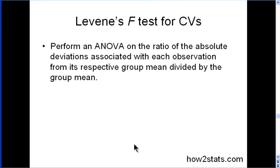You can actually use Levene's F-test for coefficient of variations. It's basically performing an ANOVA on the ratio of the absolute deviations associated with each observation from its respective group mean, divided by the group mean.